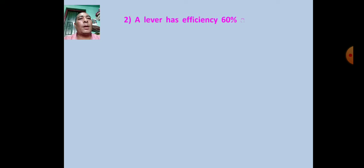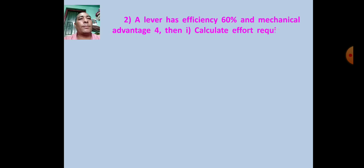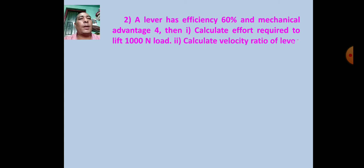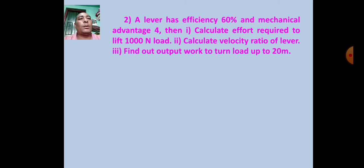Numerical 2: A lever has efficiency 60% and mechanical advantage 4. Calculate: (1) effort required to lift a 1000 Newton load, (2) velocity ratio of the lever, (3) output work to move the load up to 20 meters.